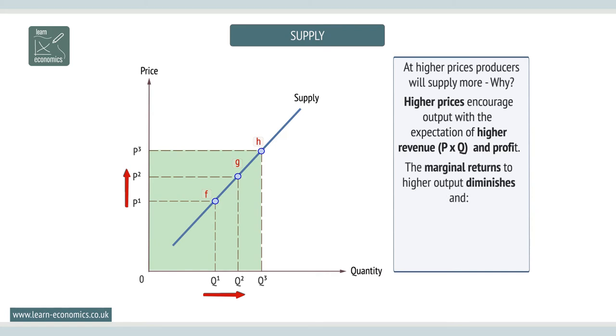Also, the marginal returns to higher output diminish, and the marginal cost of production increases, hence a higher price is required to encourage output.